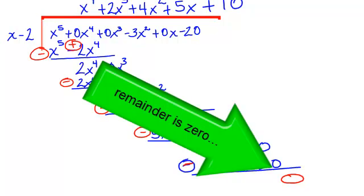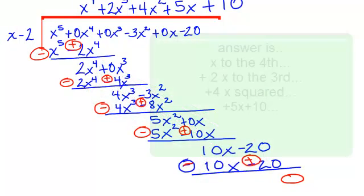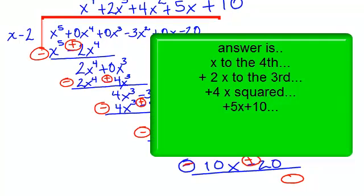Our answer is x to the 4th plus 2x to the 3rd plus 4x squared plus 5x plus 10.